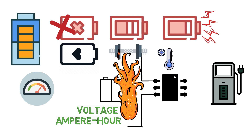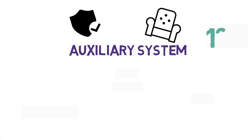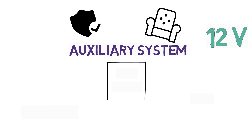We live in the 21st century where safety and comfort are very basic needs in the automotive industry. The auxiliary system is used for this purpose and works on 12V DC. To power the auxiliary systems, a DC-to-DC converter is used, which steps down the higher voltage of the battery pack into 12 volts.